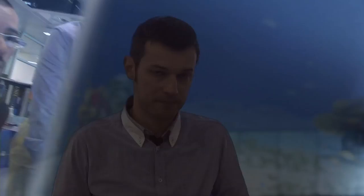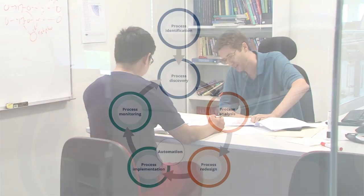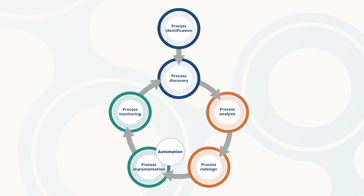Welcome to Process Identification and Discovery, the first course in a series of three, part of a program dedicated to the fundamentals of business process management. This program introduces the fundamental principles, techniques, and tools for actively managing business processes by walking you through the six phases of the BPM life cycle, with the ultimate goal of improving organizational performance. This first course provides an introduction to the BPM discipline and covers the first two phases of the life cycle.